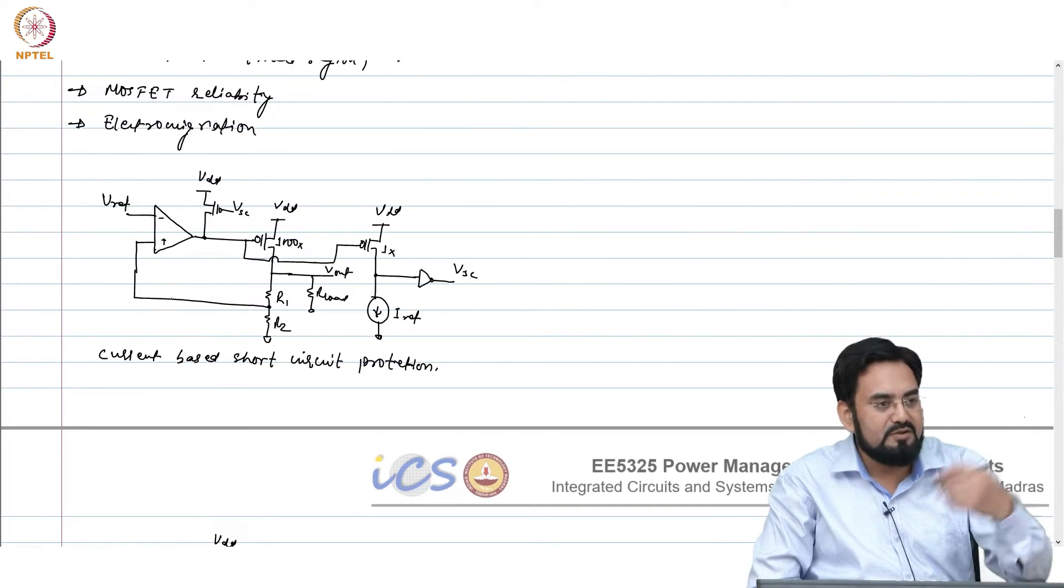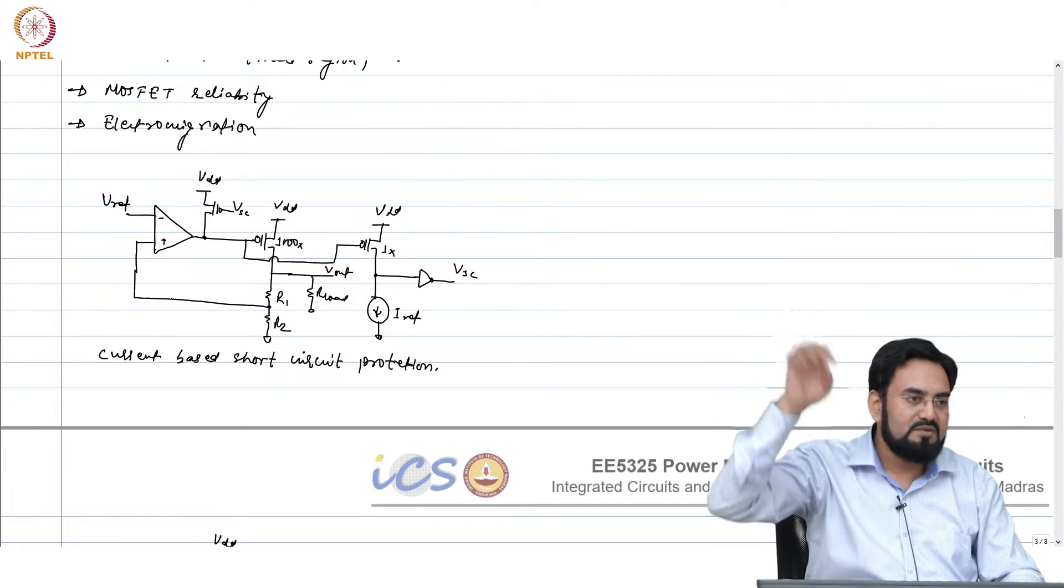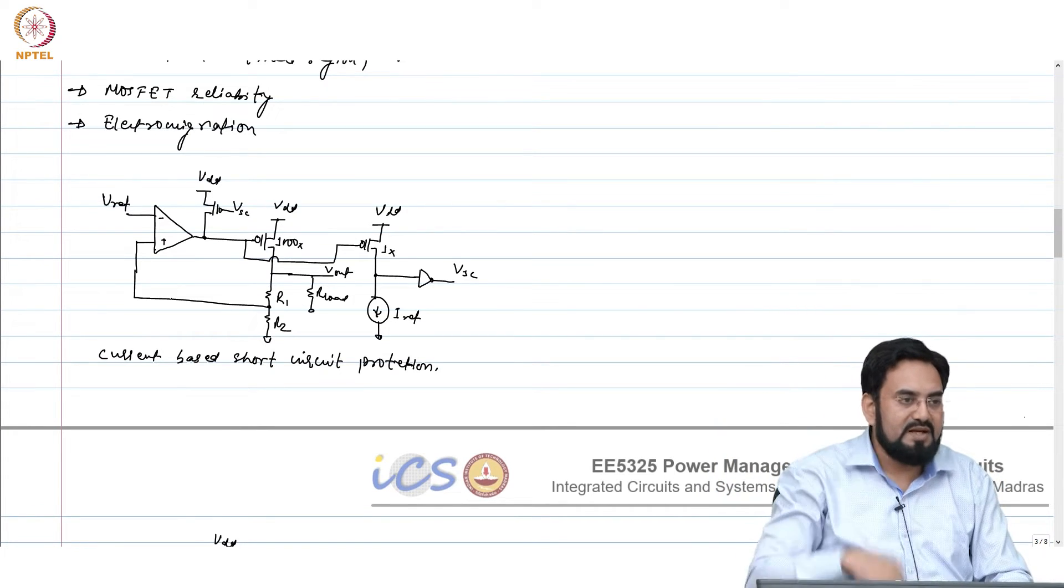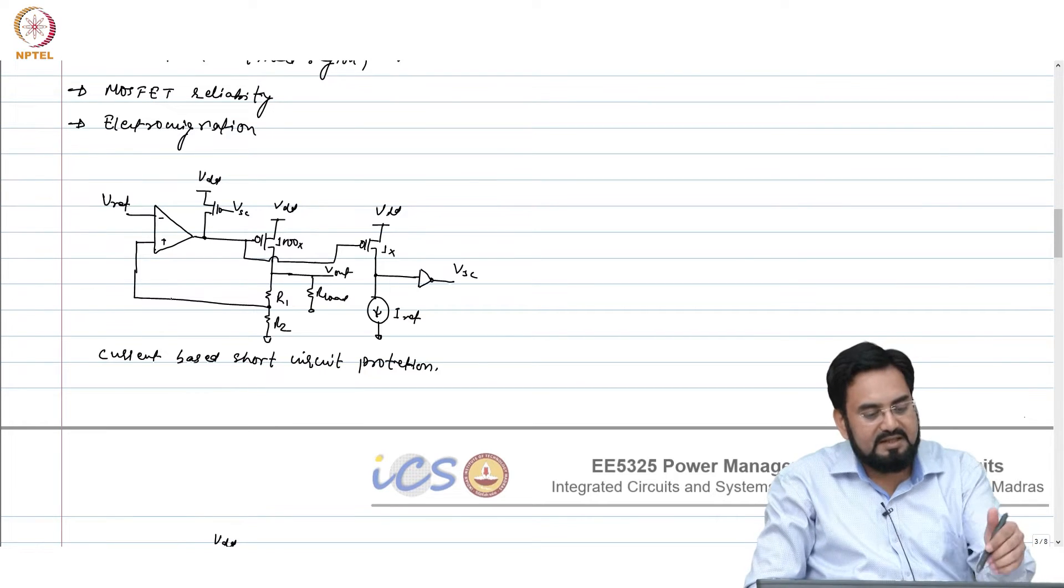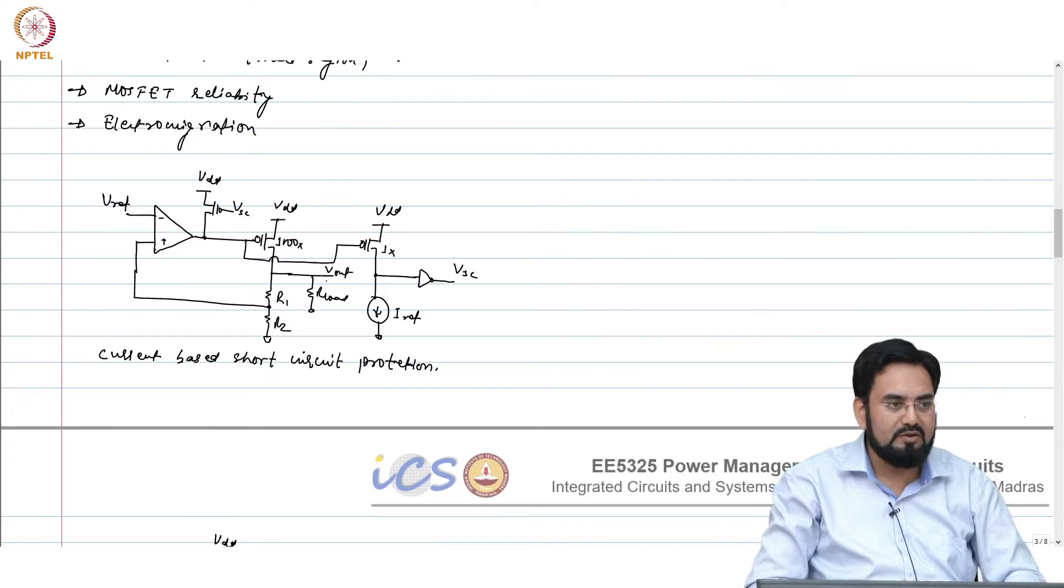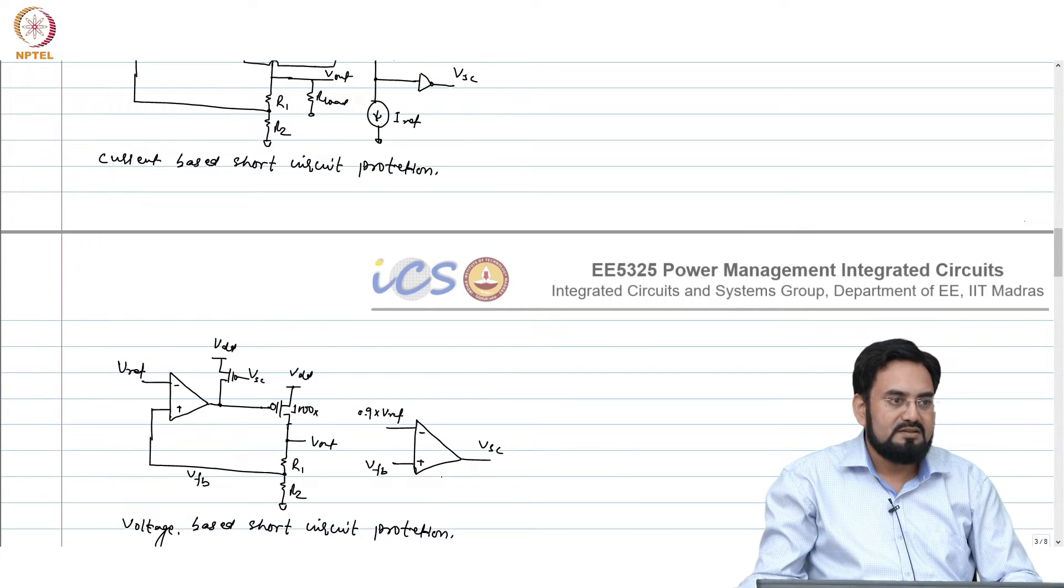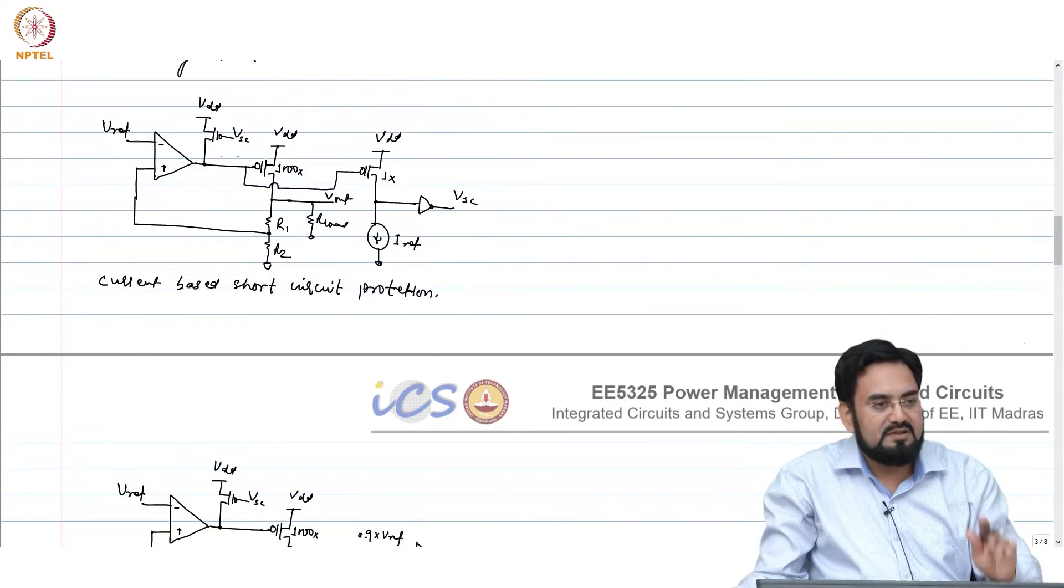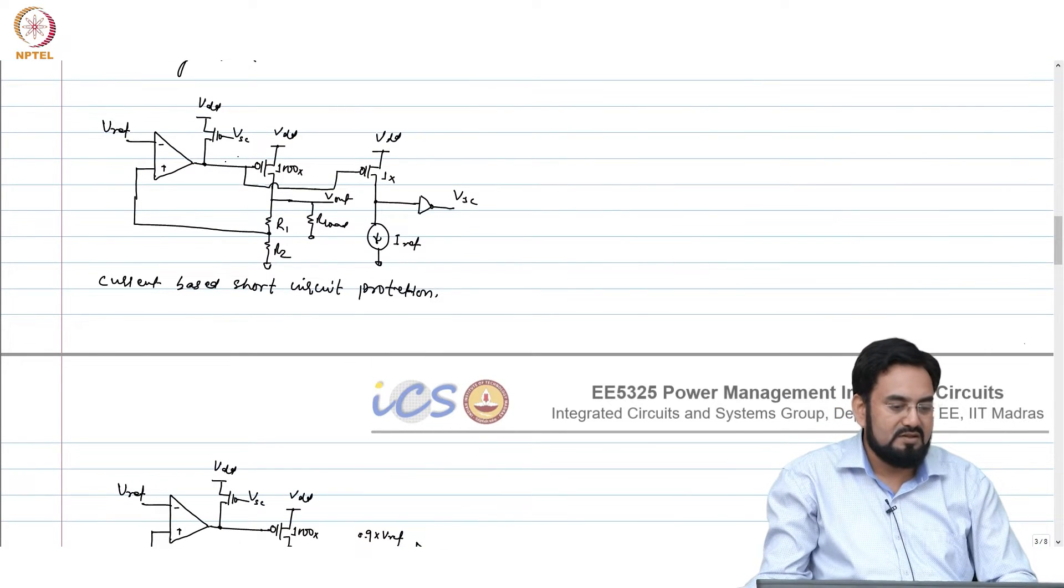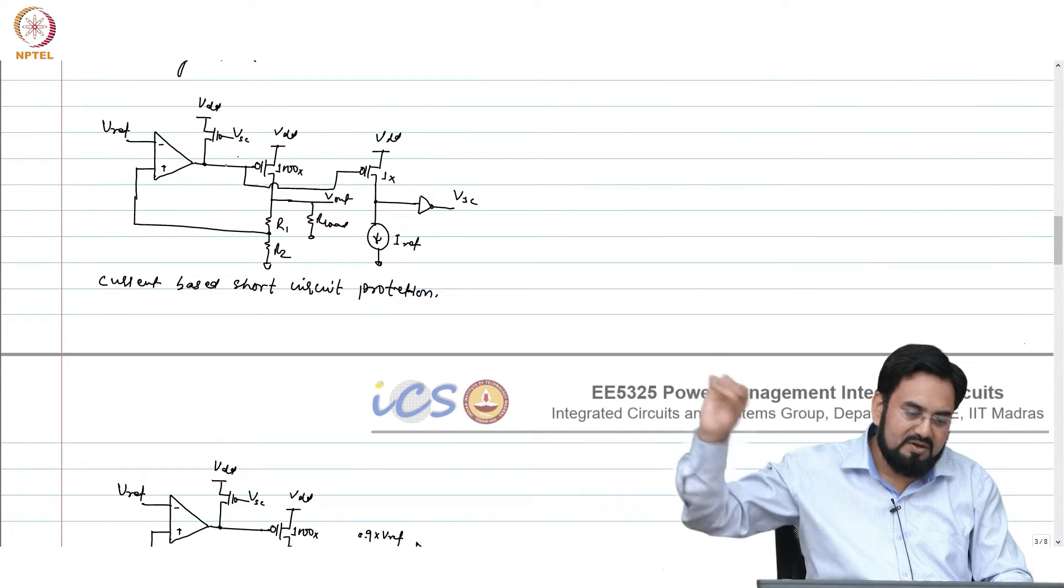If you all of a sudden make your current from 1 milliamp to 10 milliamp or 20 milliamp, if you connect to the ground literally connect to the ground then you know output is in any case going low. This comparator will trigger immediately, irrespective of whether your current changes or not.